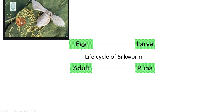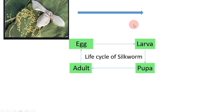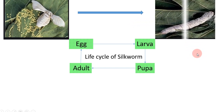At the egg stage, the egg is laid by the female silk moth after fertilization. Around 300 to 400 eggs are laid by the female silk moth. After the egg stage, the next stage is the larva stage. At the larva stage, it eats a lot of mulberry leaves. At the end of the larva stage, that is in the fifth instar, the larva produces silk thread or silk fiber.